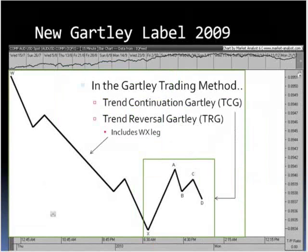Starting in 2004, I began compiling information on how the Gartley pattern evolved over time and started writing the Gartley Trading Method, published in 2010. In that book, I've identified not just the typical X-A-B-C-D Gartley pattern, but I'm starting to use the move that precedes the X-A-B-C-D pattern. We've had to categorize the Gartley pattern into two specific types: the trend continuation Gartley and the trend reversal Gartley.